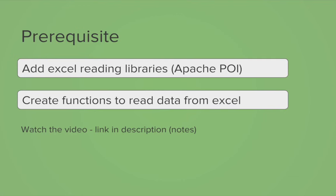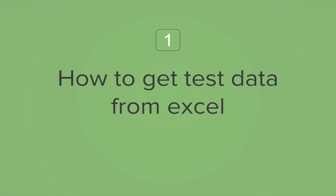The prerequisite for this session is you must already have the Excel libraries added. We have used Apache POI and you should already have created the functions to read data from Excel. This is something we have already learned in our last session and I will also provide the link for that video in the description. In that session we learned from scratch how to add Apache POI libraries and how to create Excel reading functions.